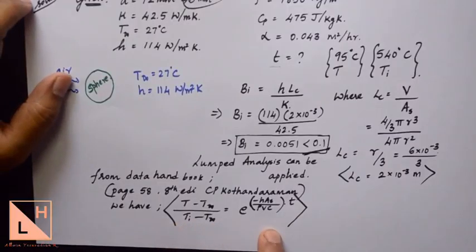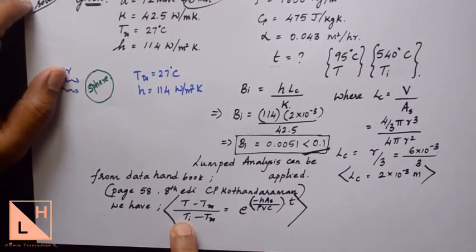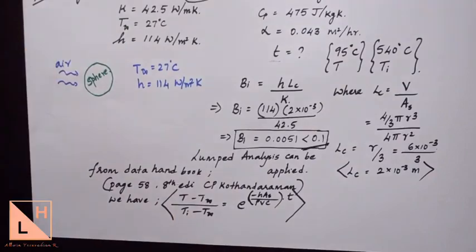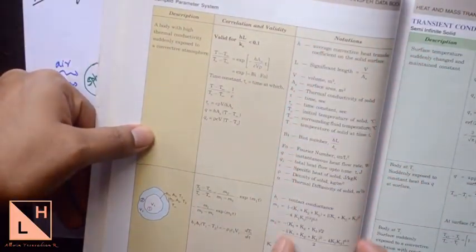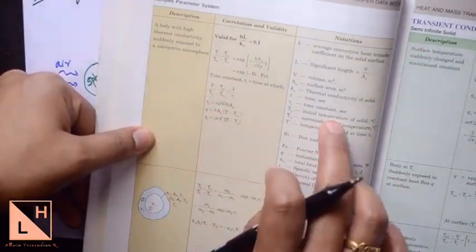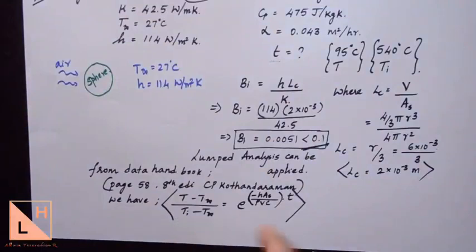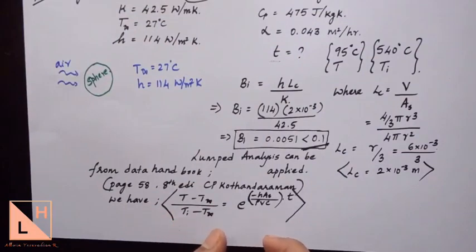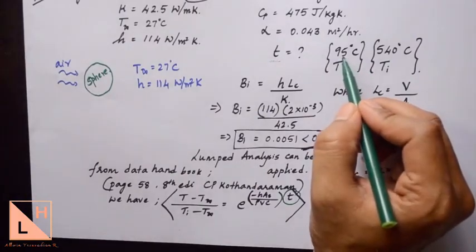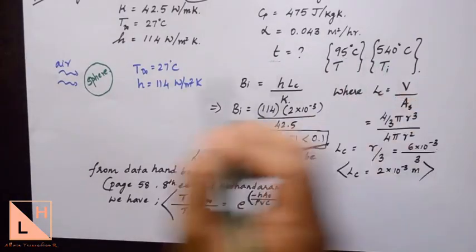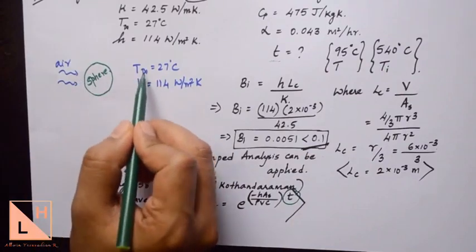From the data handbook, the temperature distribution formula has T0 in the denominator. In the data handbook, the description on the right-hand column explains that T0 is simply the initial temperature of the solid, which we have taken as Ti. Be clear about what term you are considering and what it really means. The unknown parameter is the time taken for the sphere to reach 95 degrees Celsius from 540 degrees Celsius when kept in an air stream with the given T-infinity and h values.